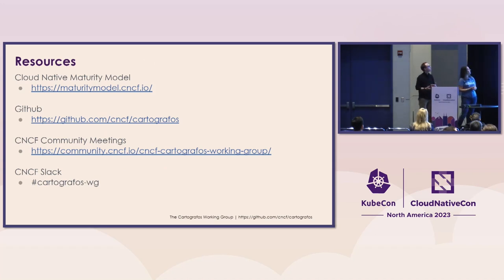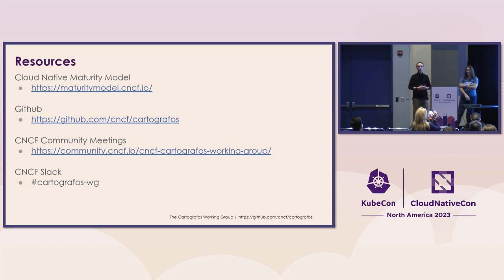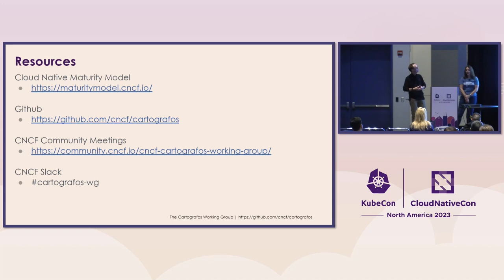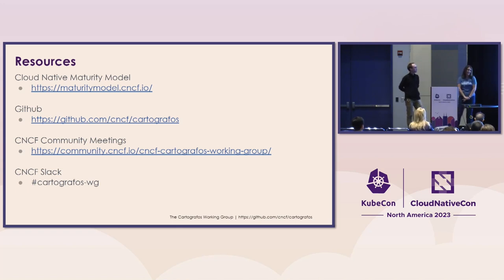The maturity model is available at maturitymodel.cncf.io. It's all in GitHub, so you can submit an issue or a pull request and we'd be delighted to review that. We hold community meetings every two weeks at 1 p.m. Eastern on a Tuesday — please join up. You'll need to register at community.cncf.io. And if you're not ready to commit to an hour-long conversation, you can also just reach out to Simon, myself, or John Foreman, who's also a co-organizer of the group — we're all on Slack.